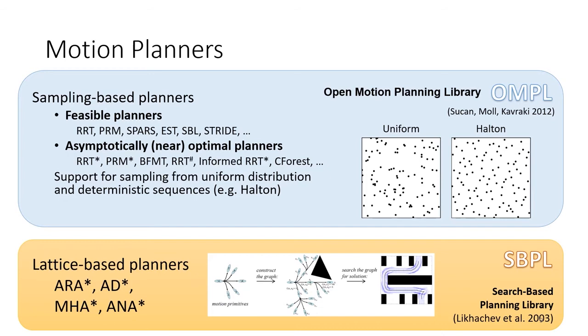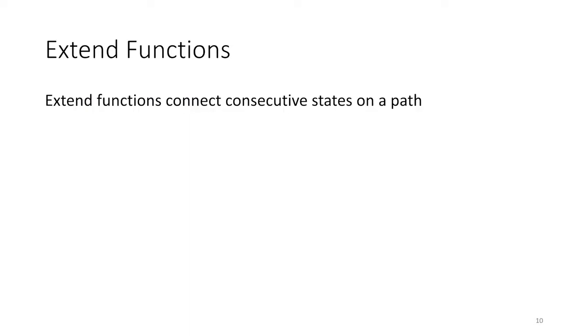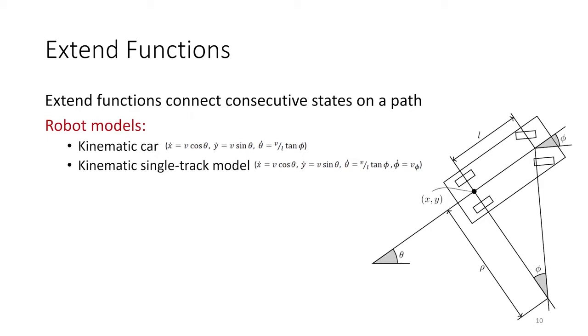Extend functions are used by sampling-based planners to connect consecutive states on a path. We support robot dynamics models for a kinematic car and a kinematic single-track model that account for a two-dimensional position plus yaw angle of the robot. The typical car steer functions, such as Dubins and Reeds-Shepp are included.